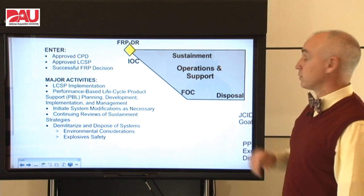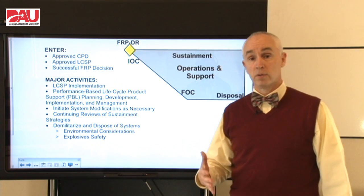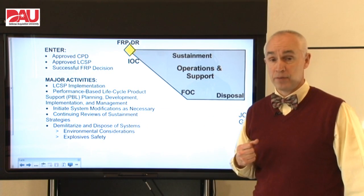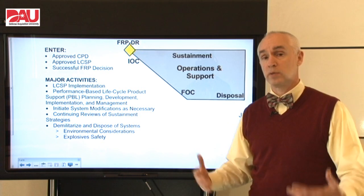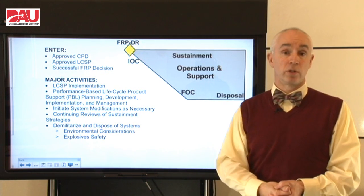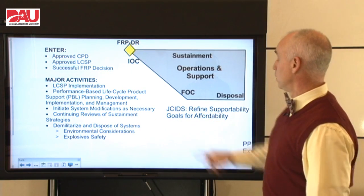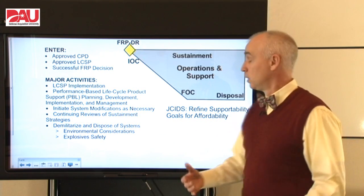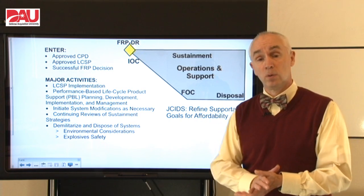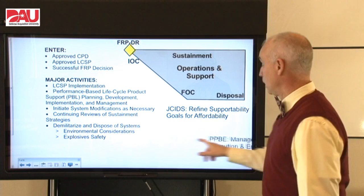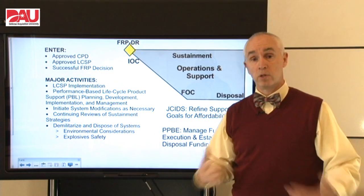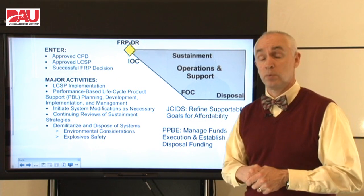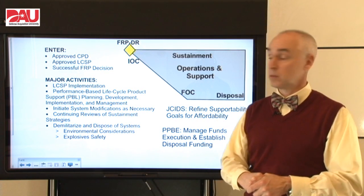At the end of this life cycle, we have to dispose of the system properly. Just like support and reliability, disposal has to be designed in earlier — way back in the TMRR phase, you've got to be considering support and disposal and designing the ways to do that into the system. Within JCIDS, our users are going to help through feedback systems with logistics to refine supportability goals and help drive costs down. We've got to continue to maintain execution of our funding and maintain our funding in the Future Years' Defense Program, as well as look out and see where we need to start putting in funding for disposal. We also have to make sure when we do that disposal that we consider the environment and safety, because most of our systems in the Department of Defense tend to be hazardous.